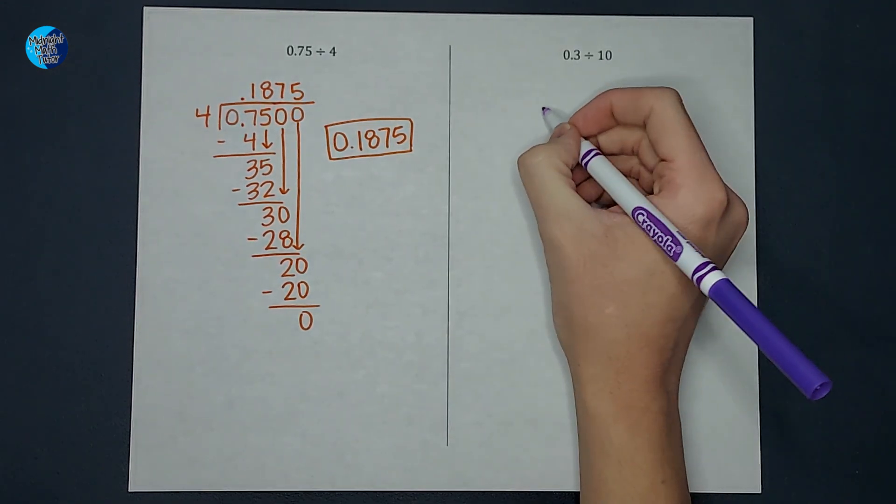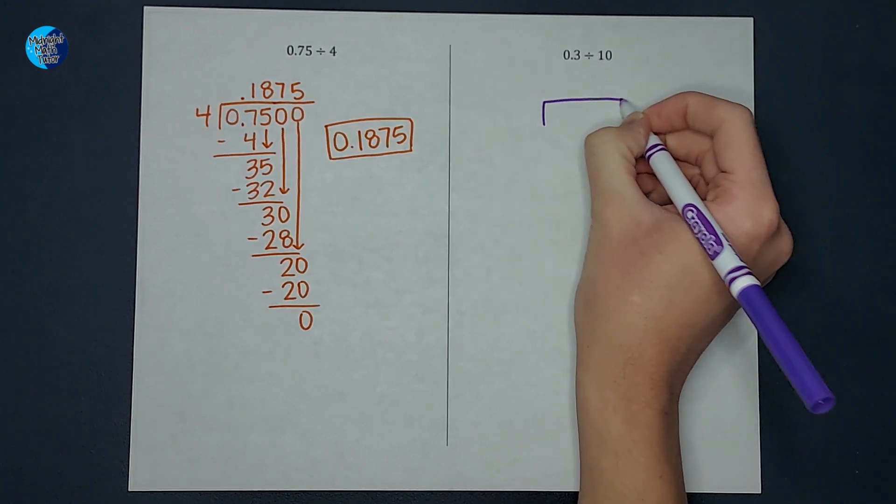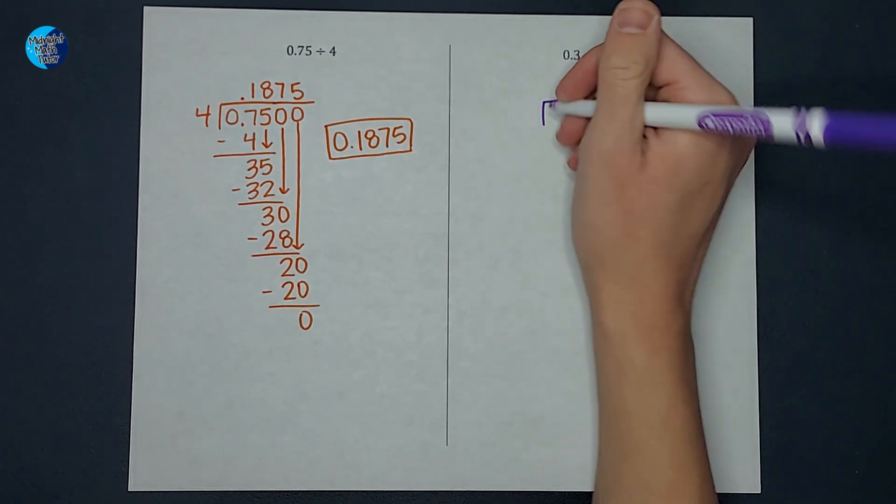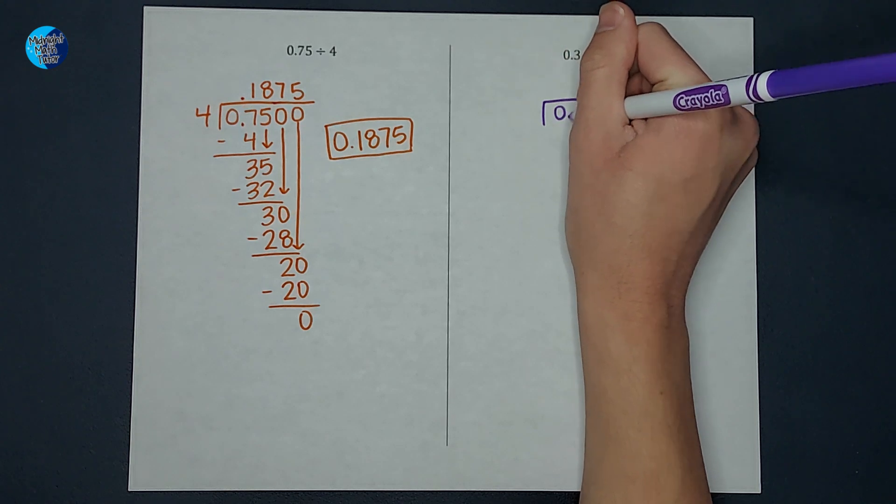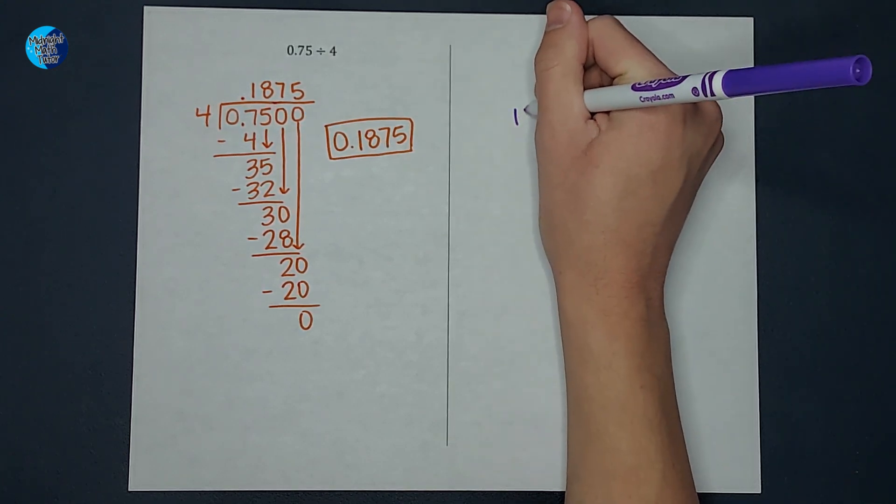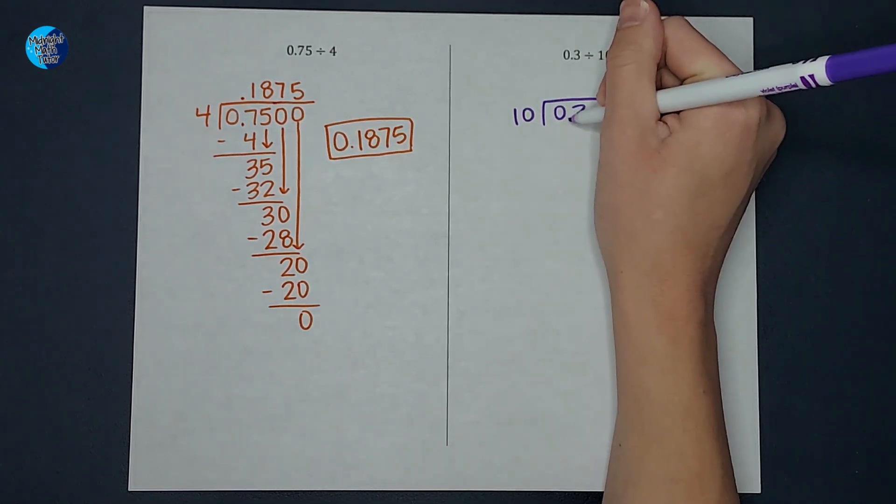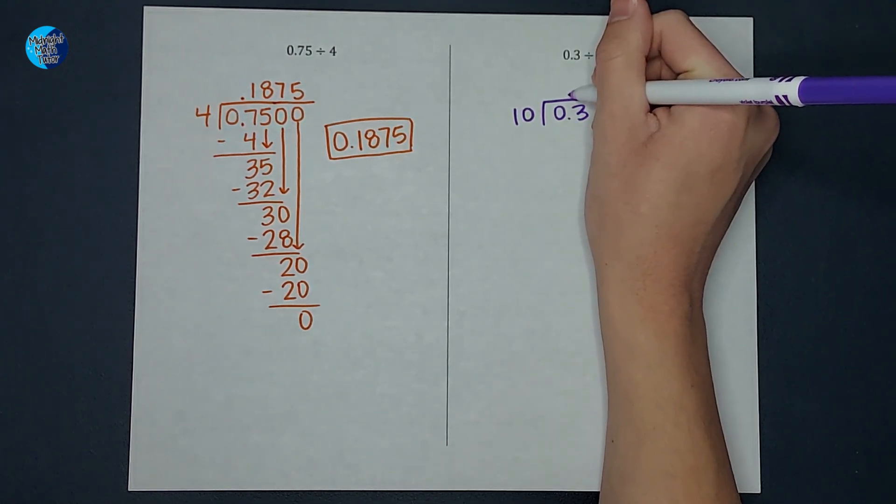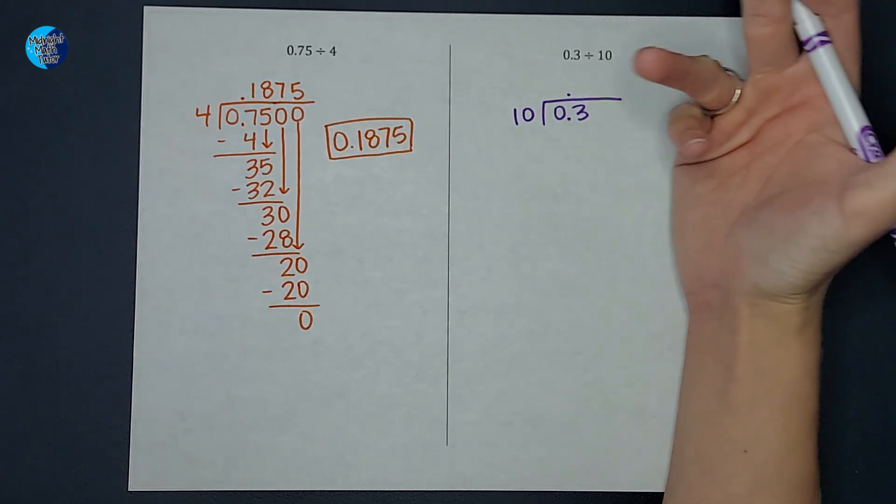So when I do this long division, my first number is in the box. So 0.3 is in here and 10 is going to be on the outside. Now I need to make sure that this decimal is in my answer here and then I can kind of ignore it. It's kind of nice.